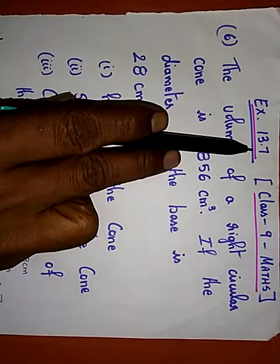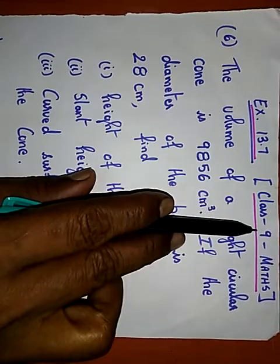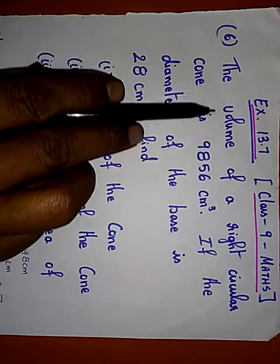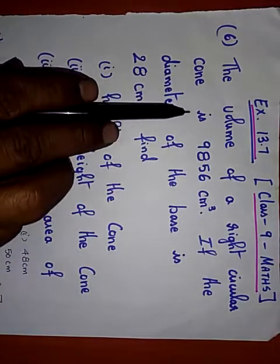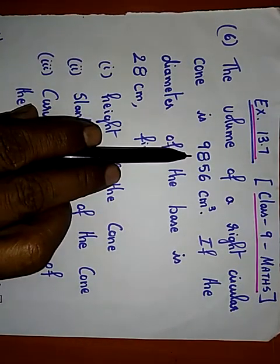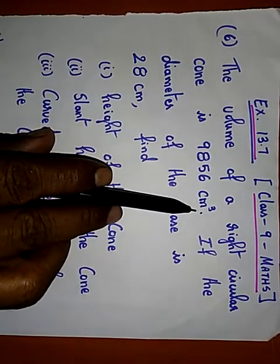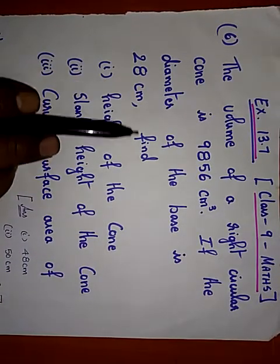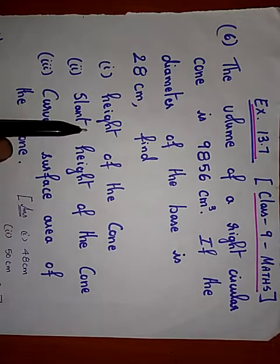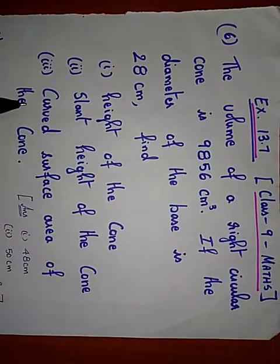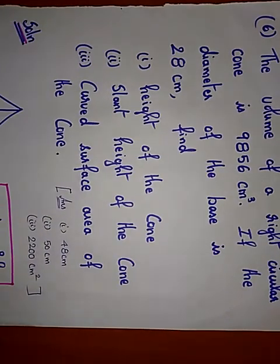Exercise 13.7, Class 9 Mathematics, Problem 6. The volume of a right circular cone is 9856 centimeter cube. If the diameter of the base is 28 centimeter, find the height of the cone, slant height of the cone, and curved surface area of the cone.